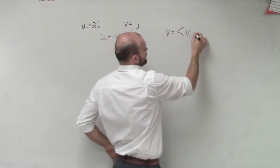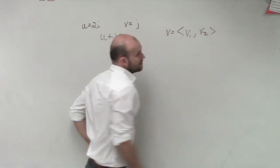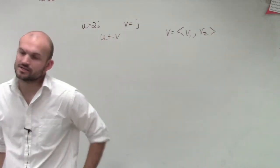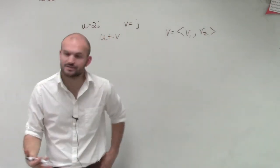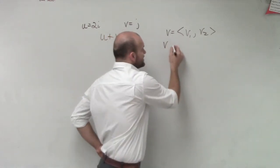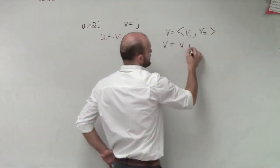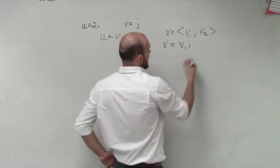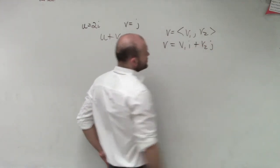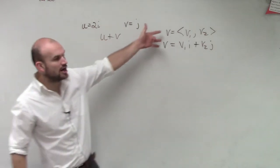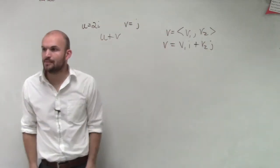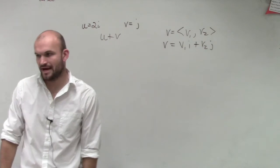Vector was in the component form of v1 comma v2. But remember, ladies and gentlemen, we also stated, this is what we talked about last class period, vectors we can also write as a linear combination of v1 times the unit vector i plus v2 times the unit vector j. So we can also write a vector as a linear combination of your two unit vectors i and j.